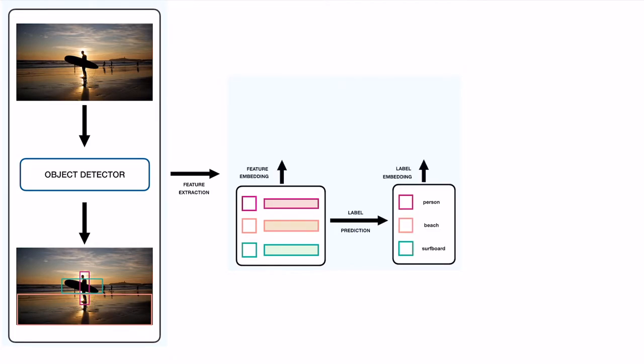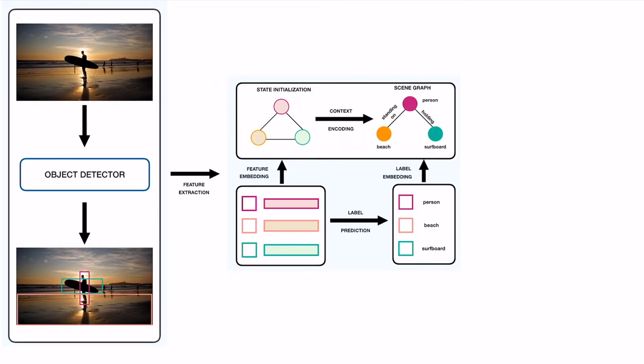The features along with the object labels are then encoded into node states with fixed connectivity structures. These states are then refined using context encoding layers such as LSTM, GNN, etc. to obtain the scene graph predictions.